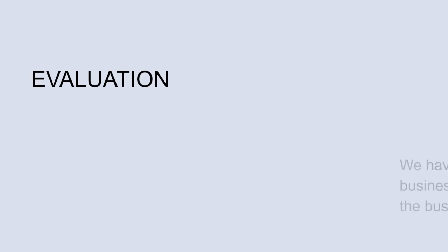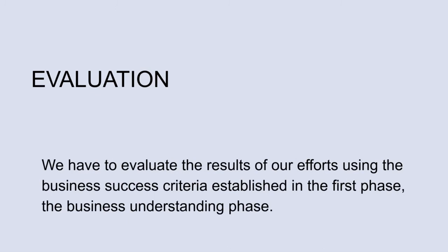The fifth phase is evaluation. In this phase, we check how good the result is. We have to evaluate the result of our efforts using the business success criteria established in the first phase — the business understanding phase. This is the key to ensuring that your organization can make use of the results you obtained. There are two types of results produced by data mining: the final model selected in the previous phase of CRISP-DM, and any conclusions or inferences drawn from the models themselves as well as from the data mining process — these are known as findings. We create models that will be able to solve our problem, for example, classify future data or create clusters from new data based on the previous data we have analyzed.